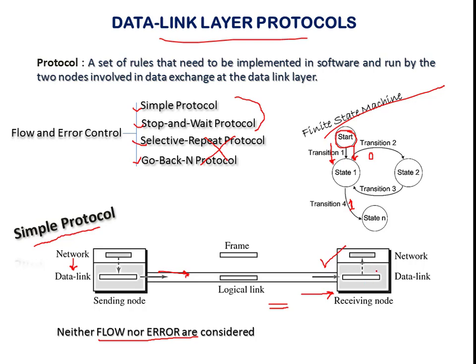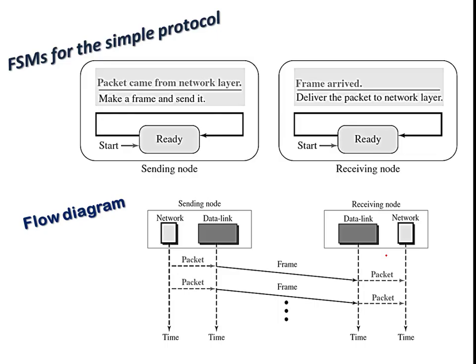As soon as the network layer passes data, the sender sends the packet. At the receiver side, as soon as the packet is received, it decapsulates the data and proceeds to process it. This simple protocol between sender and receiver can be represented with the help of two FSMs — one state machine for the sender and another for the receiver — both in a ready state.